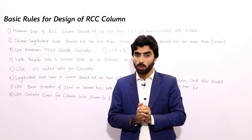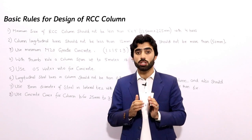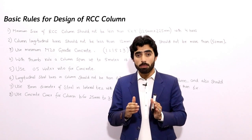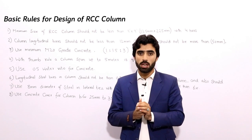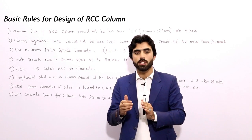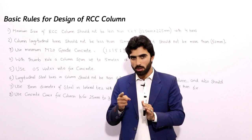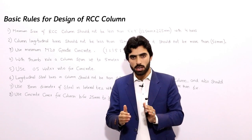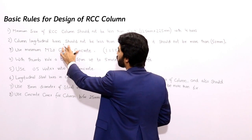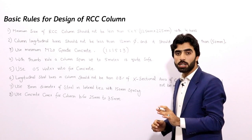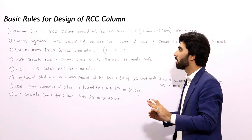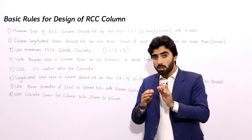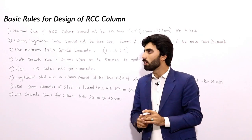The second rule is also very important. Many civil engineering students use 10 mm diameter longitudinal bars in RCC columns, but that's wrong. Use a minimum of 12 mm diameter steel bars, and don't use more than 50 mm diameter steel bars in an RCC column. So the range for longitudinal bars is 12 mm to 50 mm diameter.